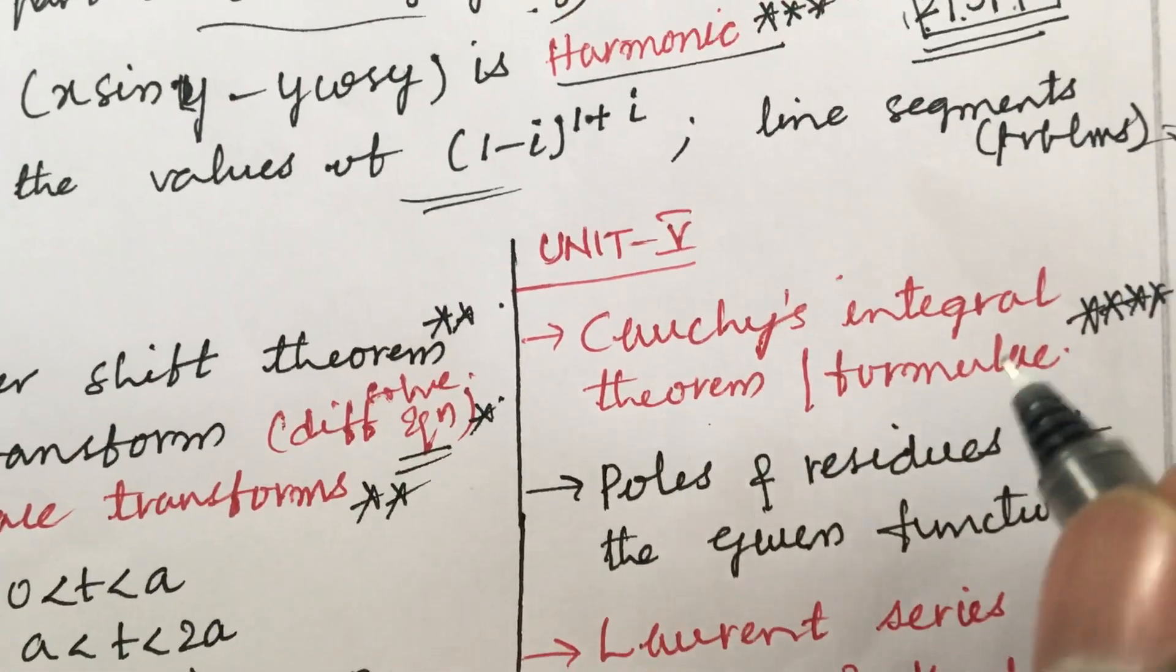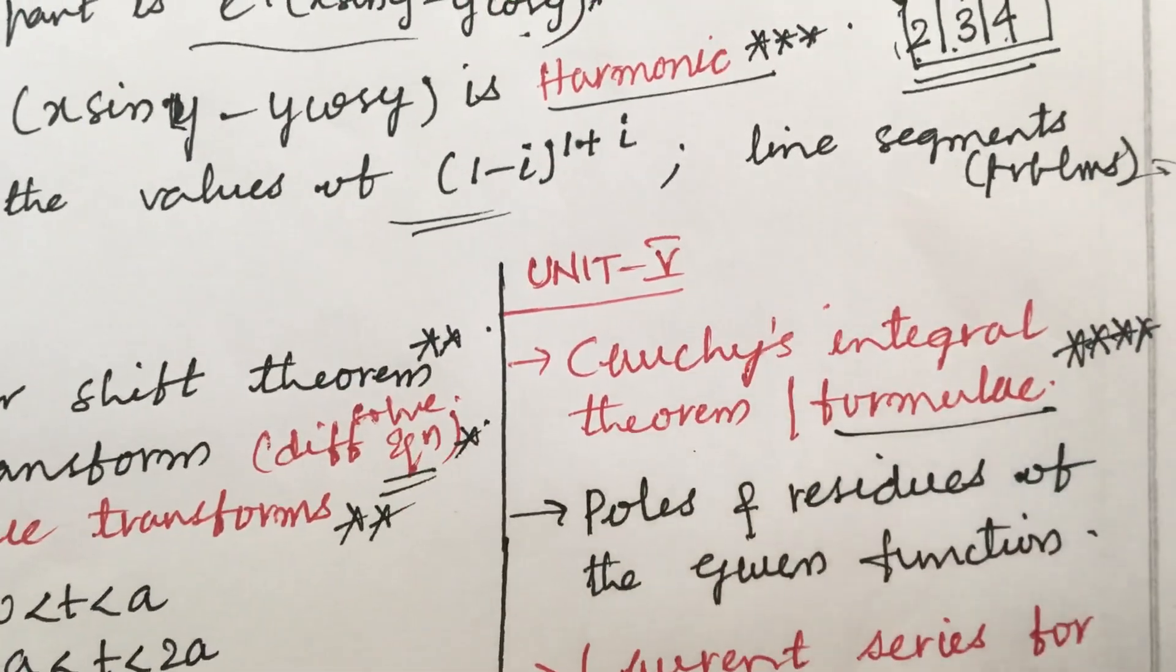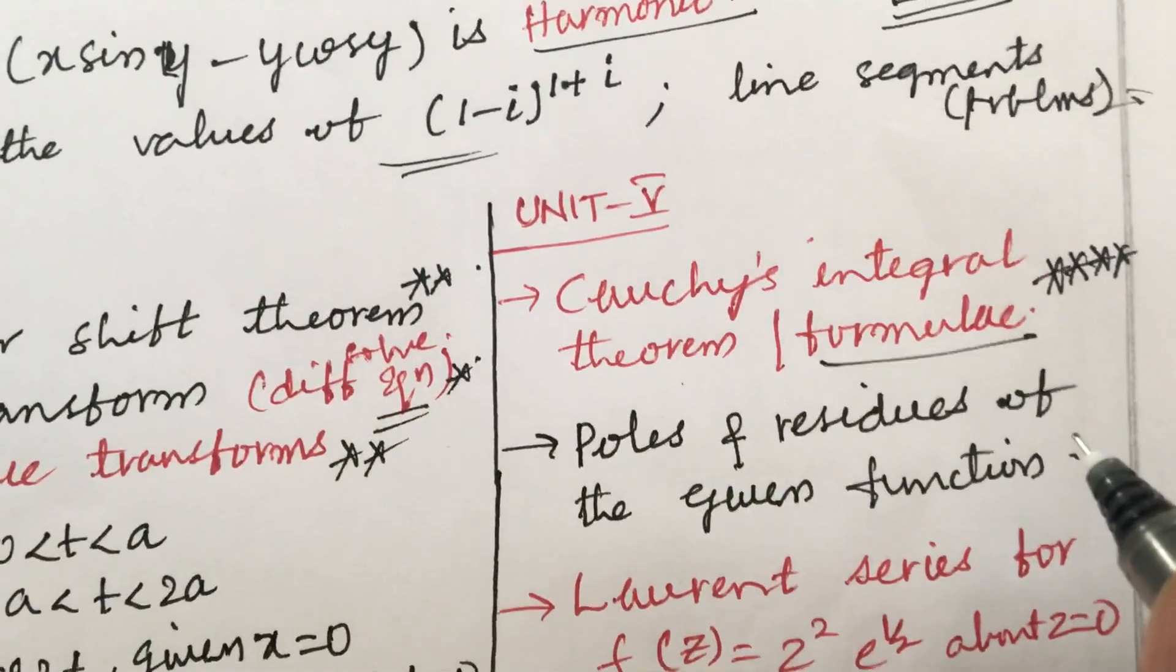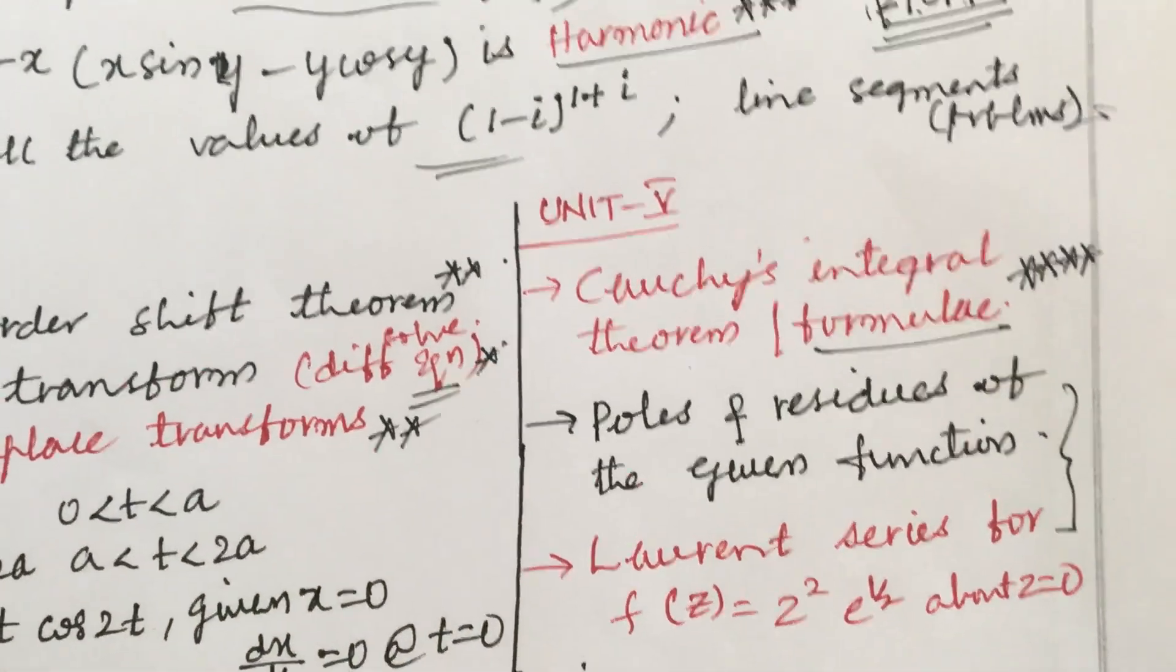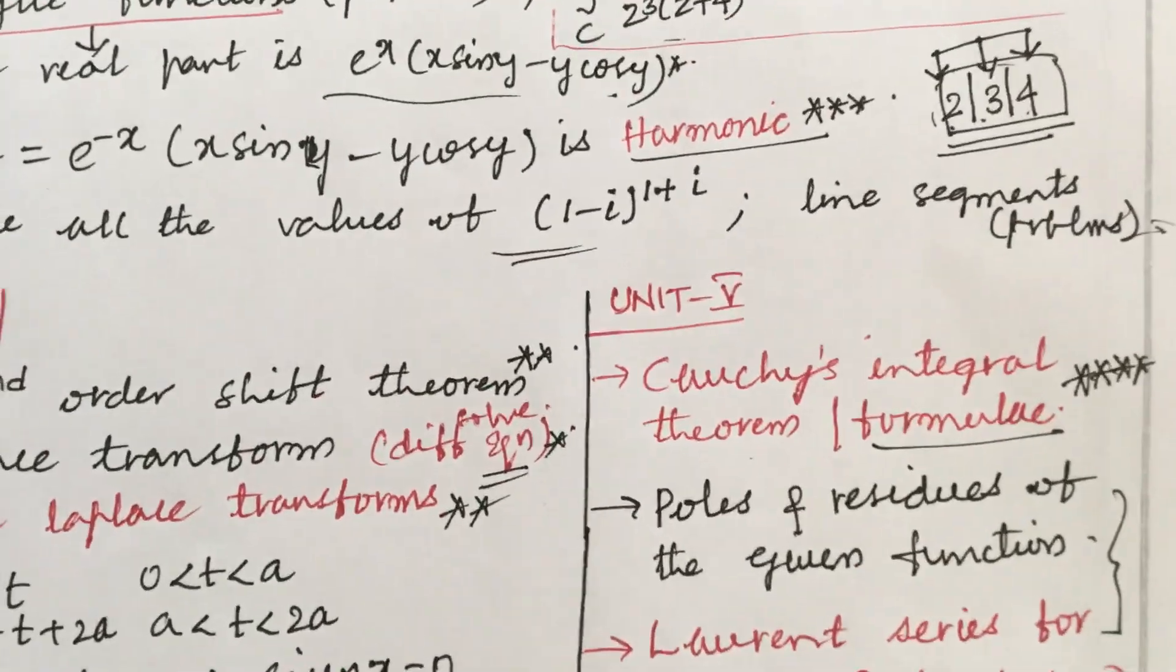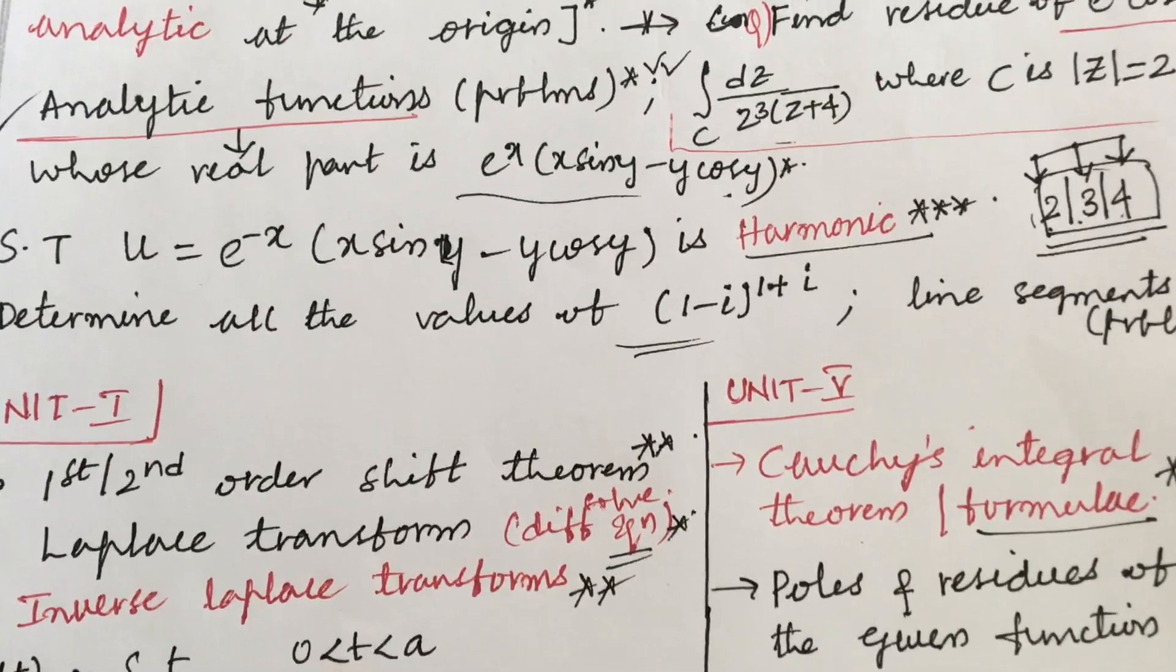If a student is looking even to score a better mark, Cauchy's integral theorem and formula is said to be the top most question. State and prove state the Cauchy's integral formula may be also one of the question. Poles and residues of the given function and the Laurent series such type of questions may occur in the question paper if you are looking to score out of out marks you need to work out even unit 1 and unit 5.